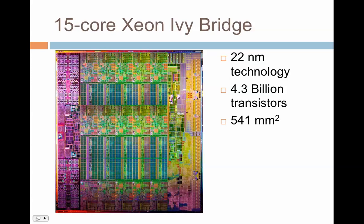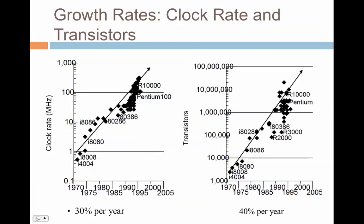Power is today one of the biggest constraints for not achieving the performance we expect as we scale to larger processor counts. Looking at growth rates: clock rates were growing at around 30% per year, and this trend held until around 2002, when clocking became a major problem. We were targeting perhaps 10 GHz, but even today we don't exceed 2 to 4 GHz.